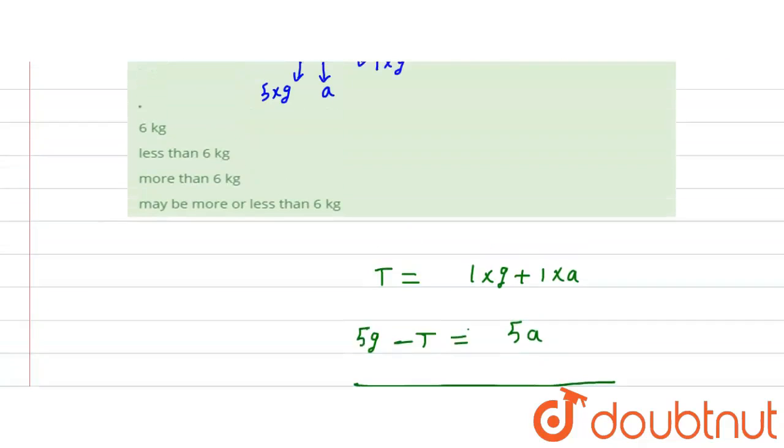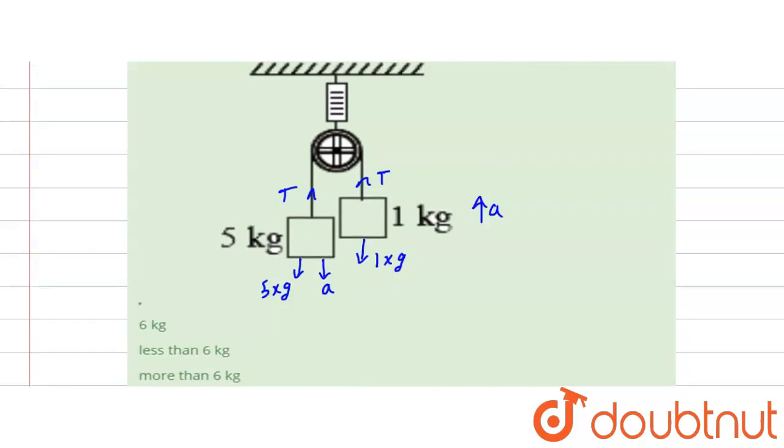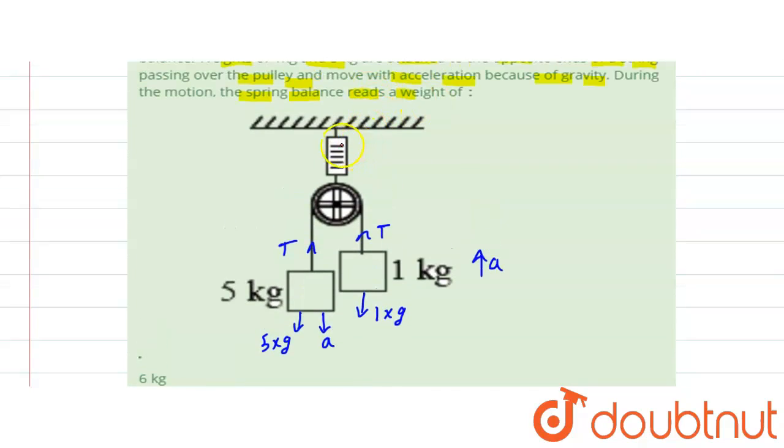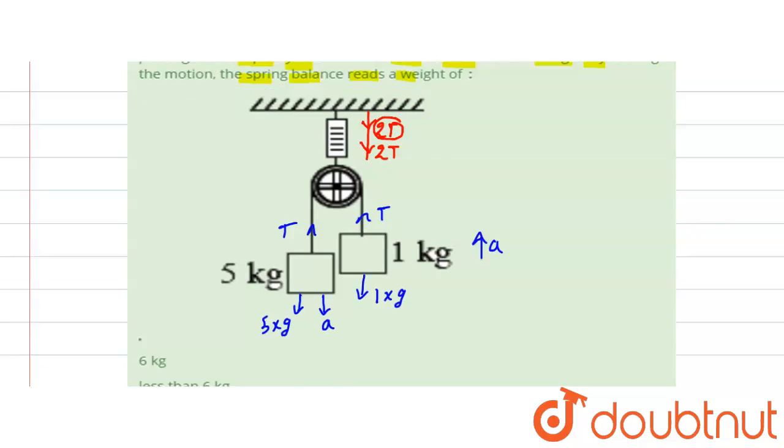Now we see the spring tension is 2T because the force on the spring will be 2T. This spring balance reading corresponds to this force.